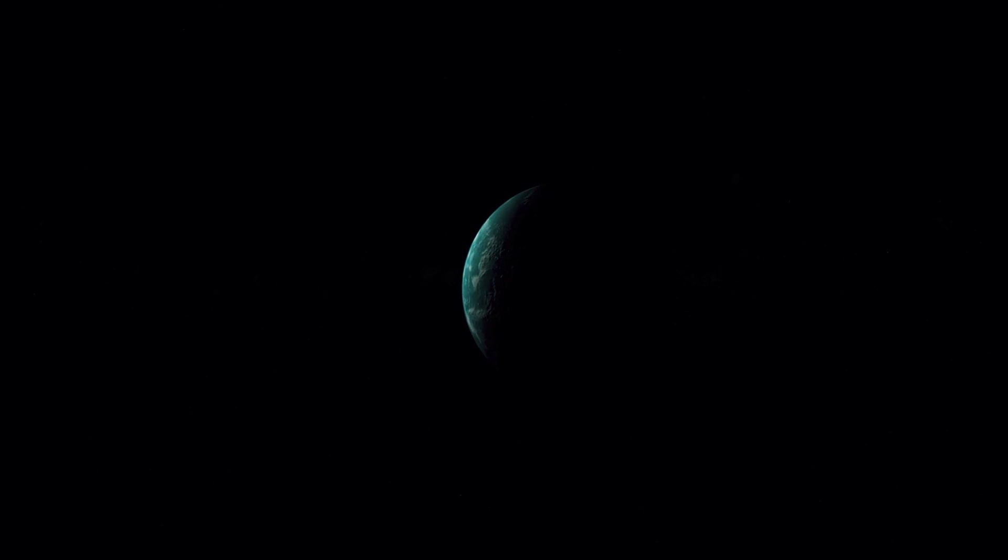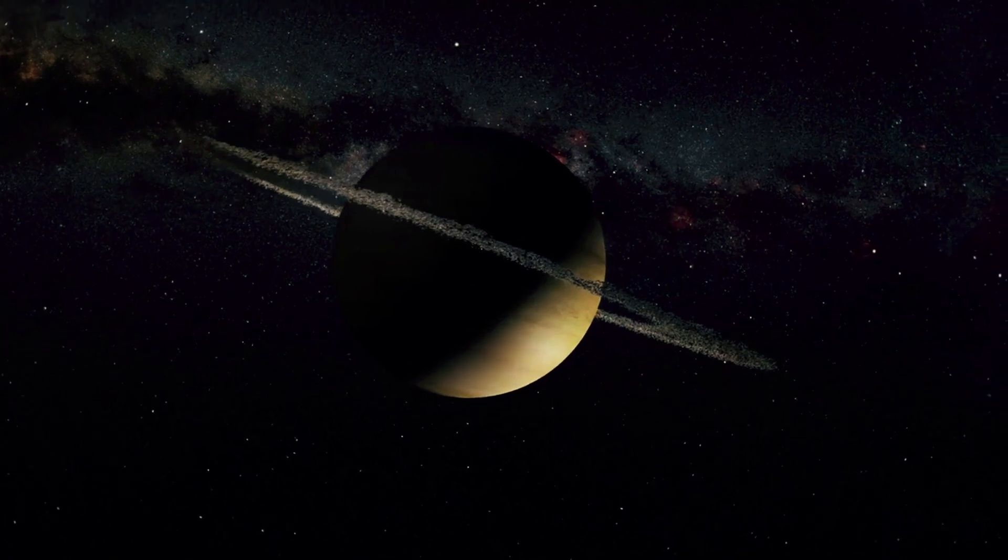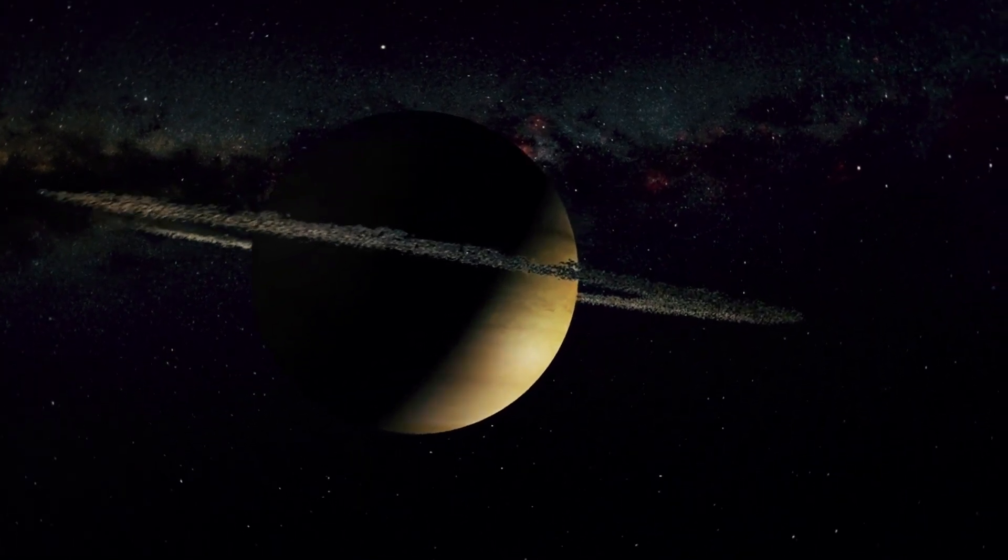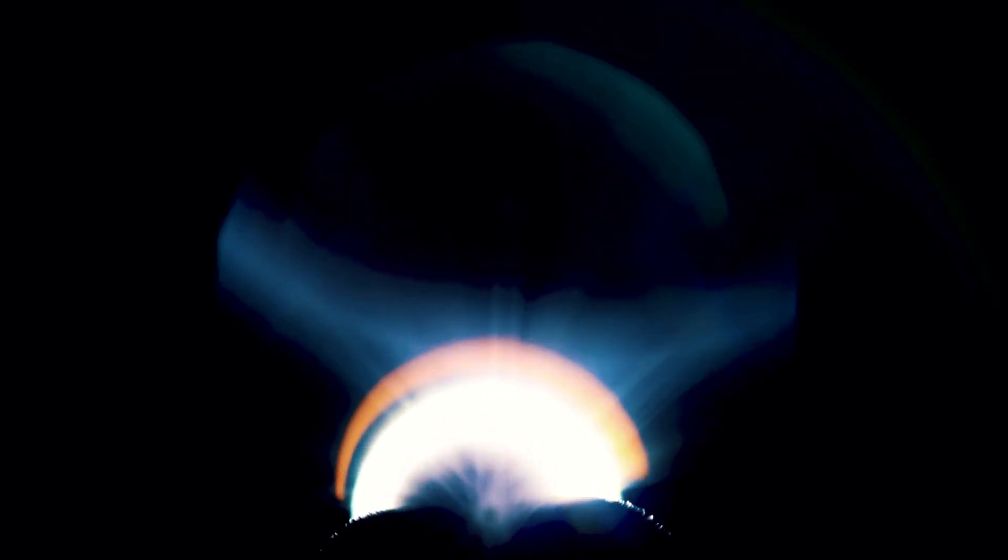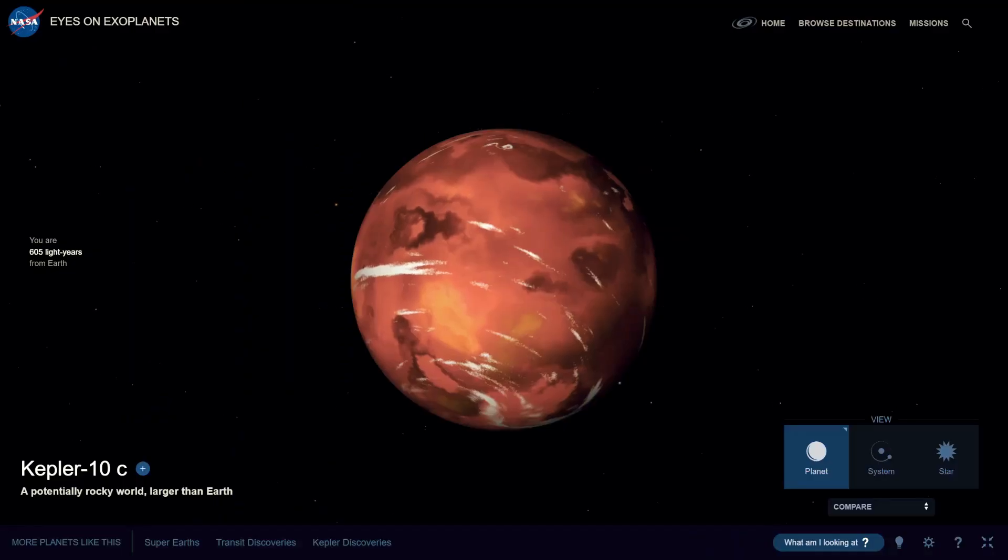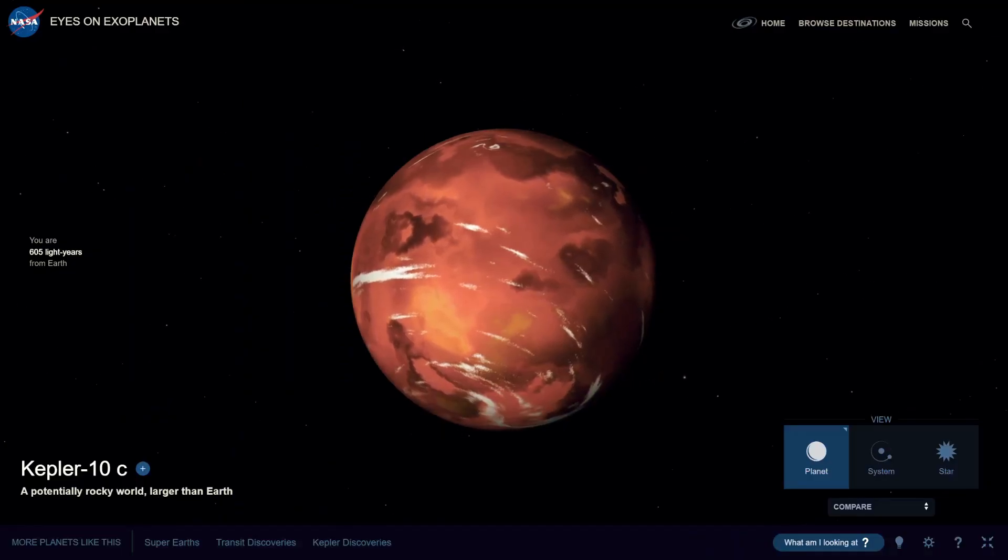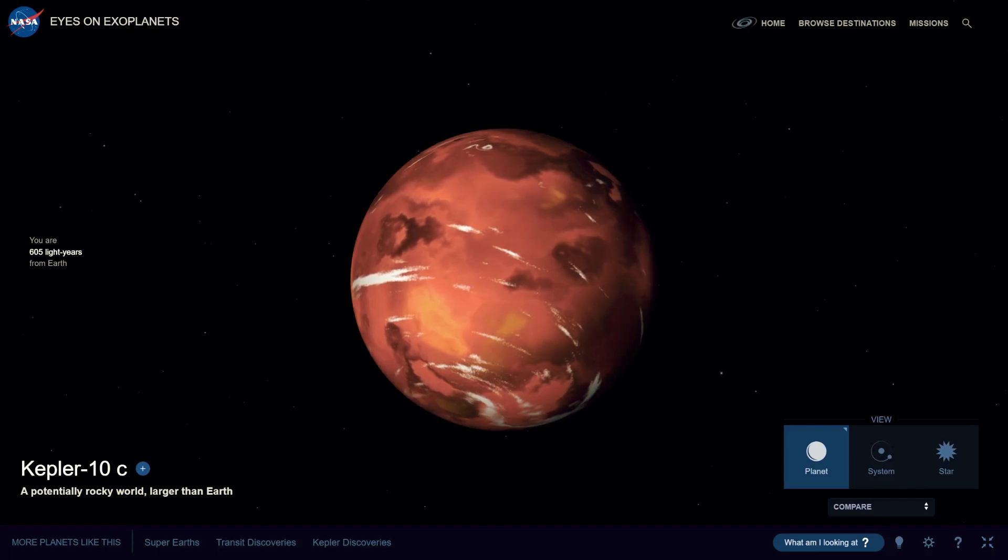The discovery of Kepler-10c has opened up a new category of exoplanets called Mega-Earths. Before its discovery, it was thought impossible for rocky planets to become so massive. This planet is so unusual that it has scientists rethinking everything they thought they knew about planet formation. Kepler-10c's existence suggests that the universe was capable of creating rocky planets very early in its history, only a few billion years after the Big Bang.